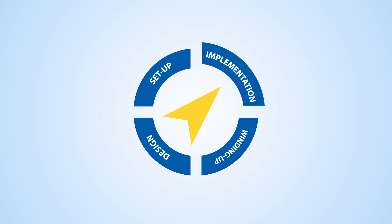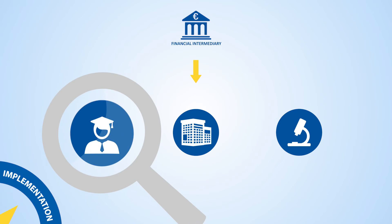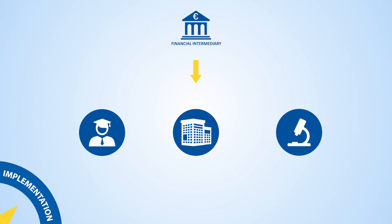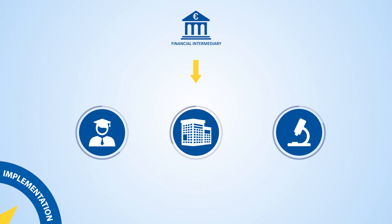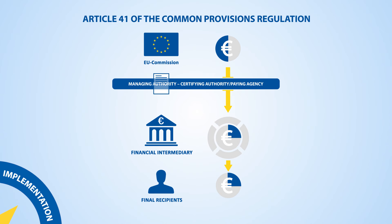Now the implementation on the ground can start. The financial intermediary will first select investments by final recipients who will benefit from support delivered through concrete financial products, such as a loan, guarantee, or an equity investment. It will be important to assess the eligibility of the investment and contribution to the programme objectives, as well as their financial viability. Once the selection is made, a contract will be signed between the financial intermediary and the final recipient, and the agreed support will be paid. Please bear in mind that the second and subsequent applications for reimbursement can be submitted only once a predefined share of the first payment has reached the final recipients, such as small and medium-sized enterprises or project sponsors.